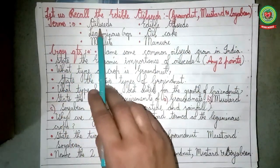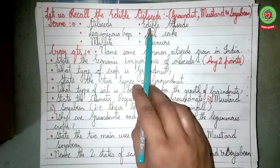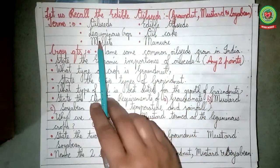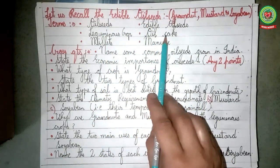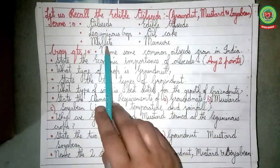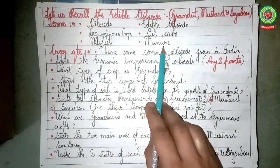The terms to recall are: number one, oil seeds; number two, edible oil seeds; number three, leguminous crops; number four, oil cake; number five, millets; number six, manure.